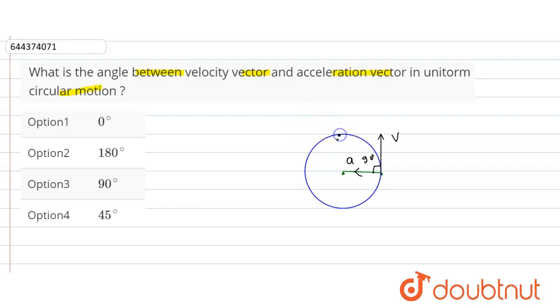See, the particle here will come here at this point. So velocity will be in this direction and acceleration will be always towards the center. Acceleration. So angle between them will always be 90 degrees.